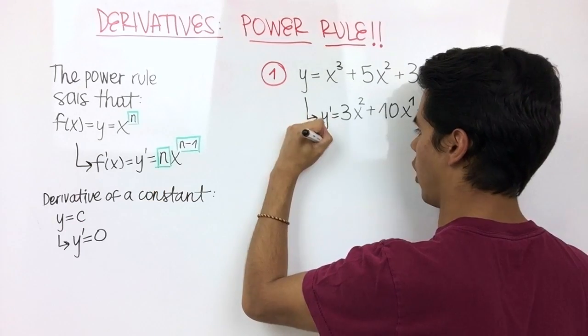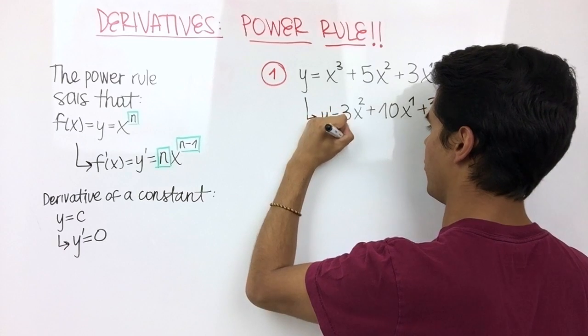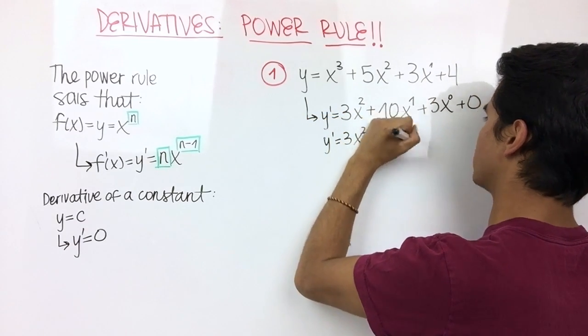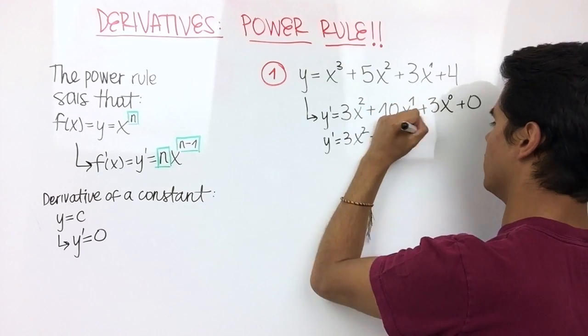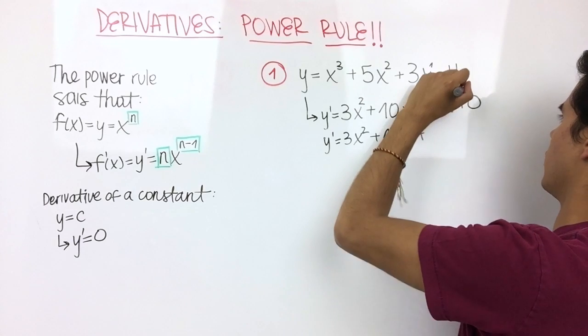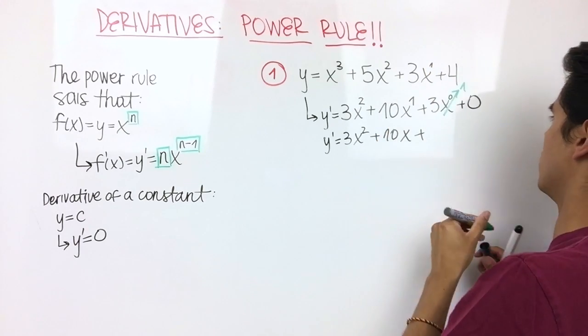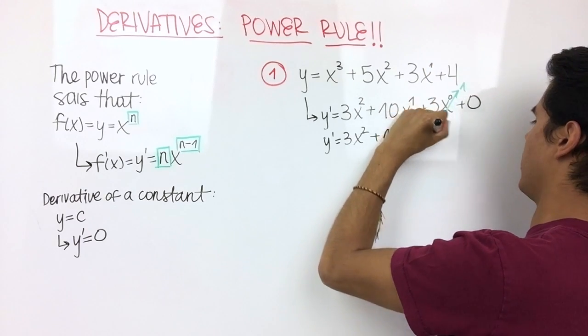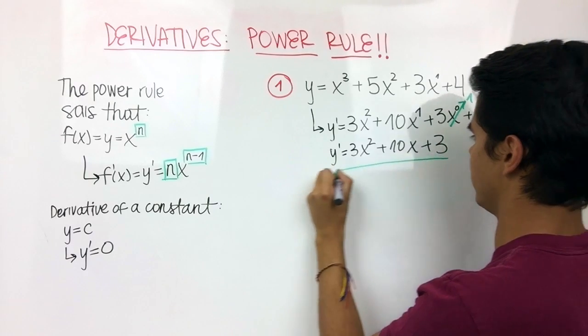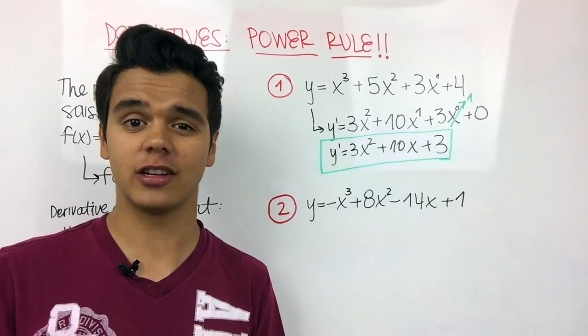Now let's clean up our derivative. So y prime is equal to 3x squared plus 10x. We don't have to write down this one. Plus, we know that any number to the power of 0 is equal to 1, so we can say that this is equal to 1, so 3 times 1 is equal to 3. Plus 0, but I'm not going to write it down, and this would be our answer.